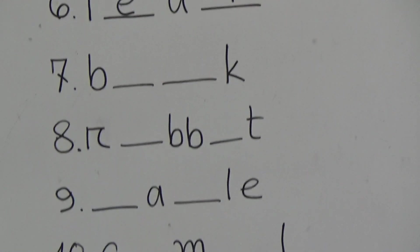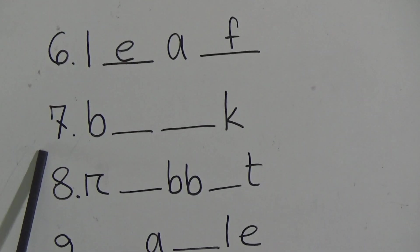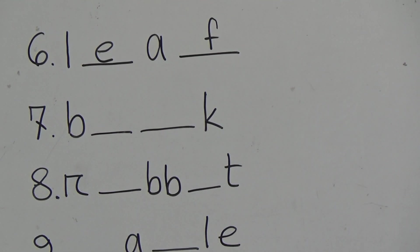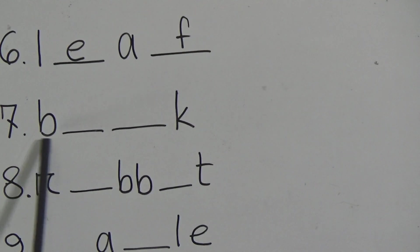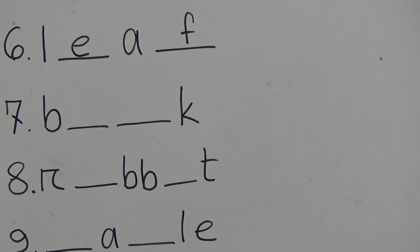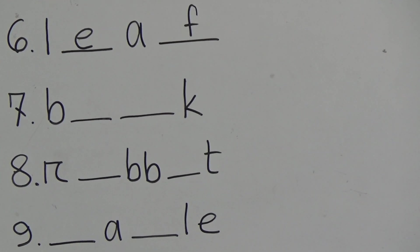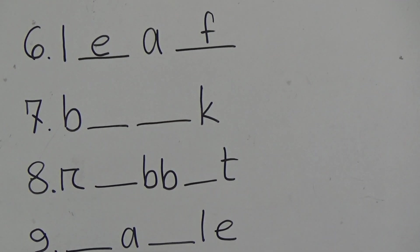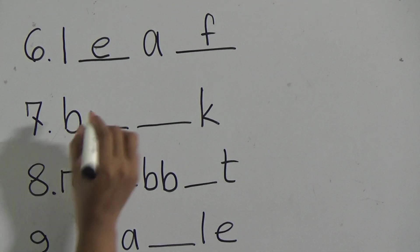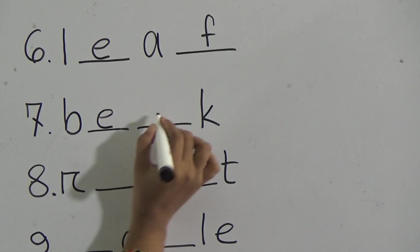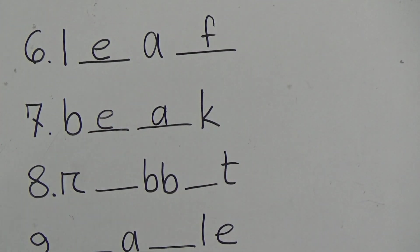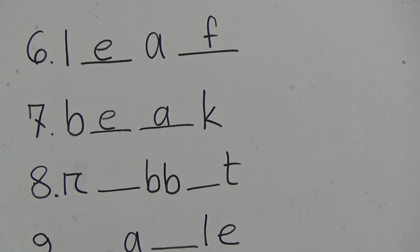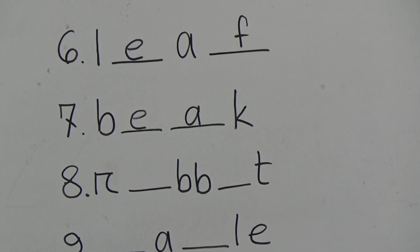Now come to number seven: B gap E gap A gap K. Students, can you guess the word? This is also a part of a bird. I hope you guess the word correctly. The word will be beak and the spelling is B-E-A-K, beak. Beak means beak of a bird. This is a part of a bird.